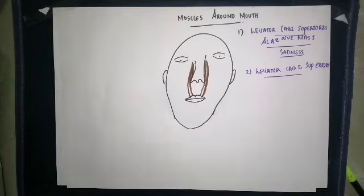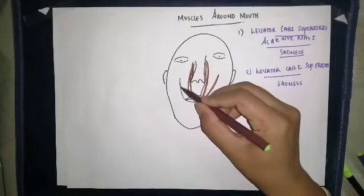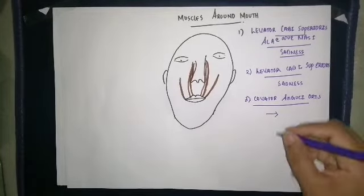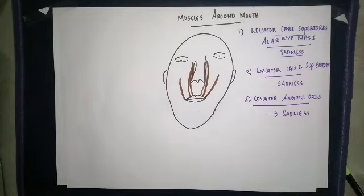The next muscle is levator labii superioris, which also helps in elevation of the upper lip and is associated with the expression of sadness. After that, levator anguli oris is inserted into the angle of the mouth and also helps in elevation of the angle of the mouth, making an expression of sadness.